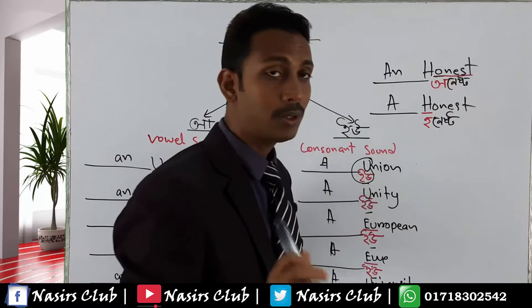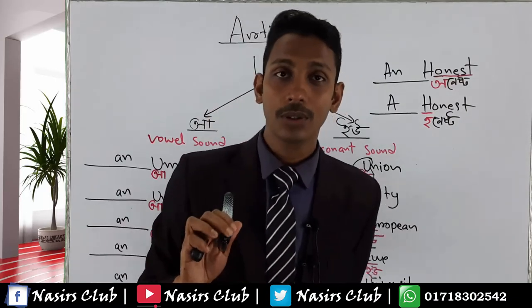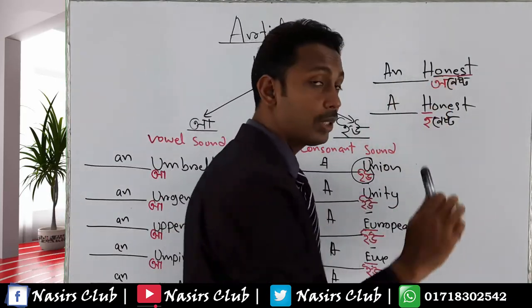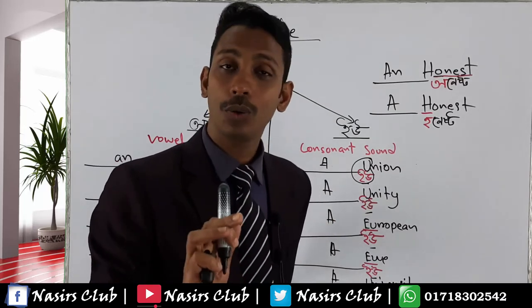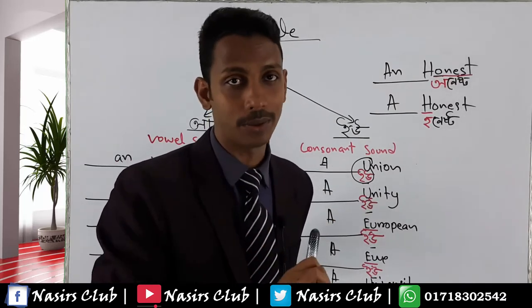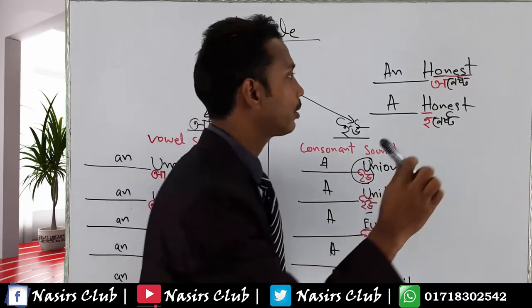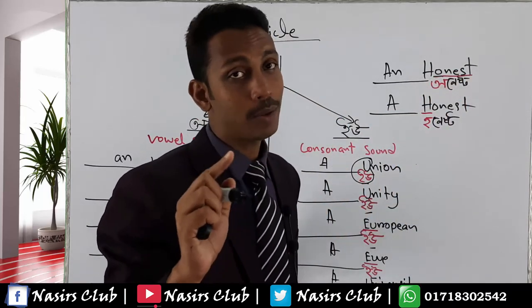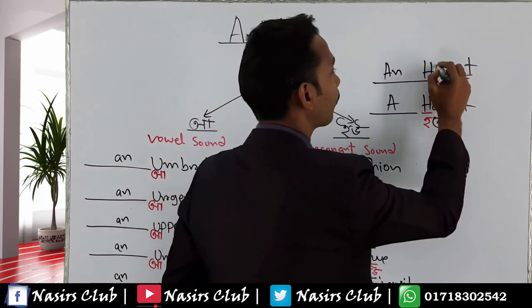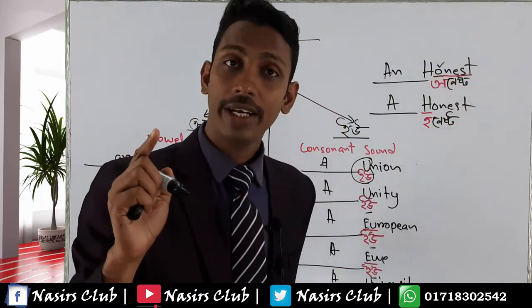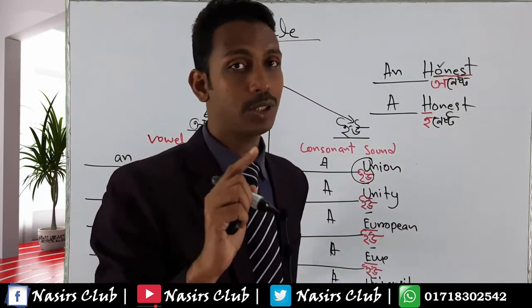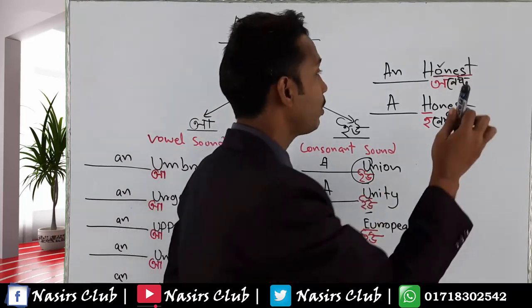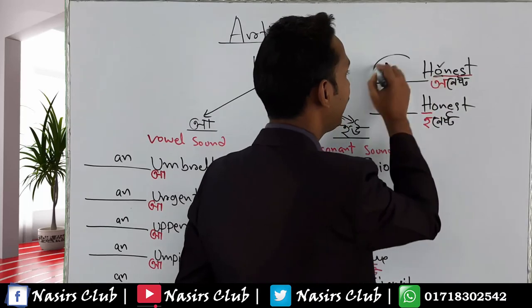The vowels are A, E, I, O, U — that is our five vowels. But what matters is the sound. Even though 'O' is a vowel letter, what determines 'a' or 'an' is the sound. If the sound at the beginning is a vowel sound, we use 'an'. If the sound is a consonant sound, we use 'a'.